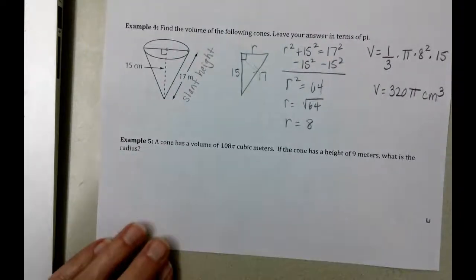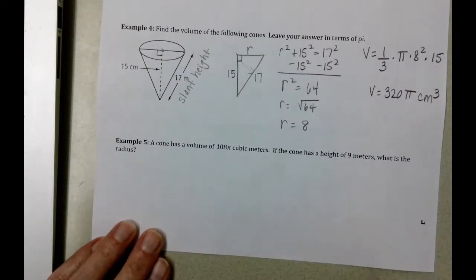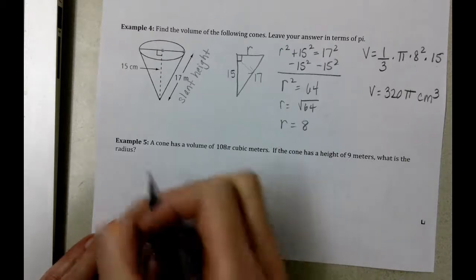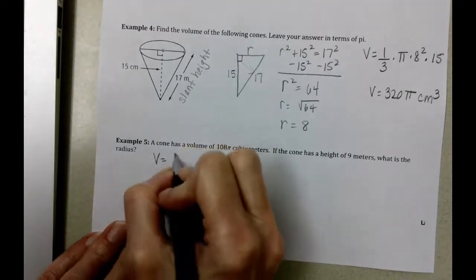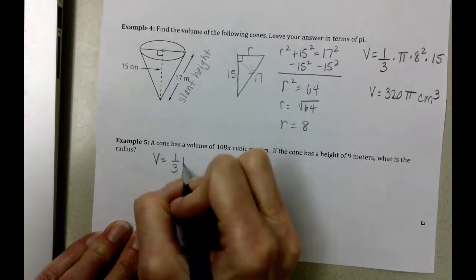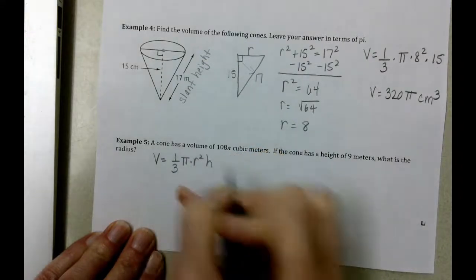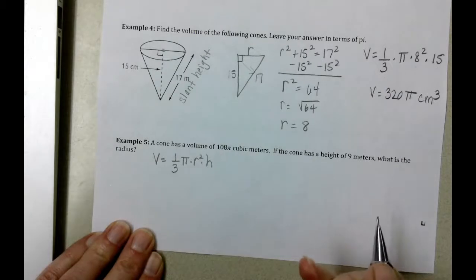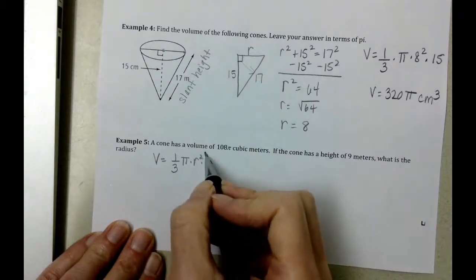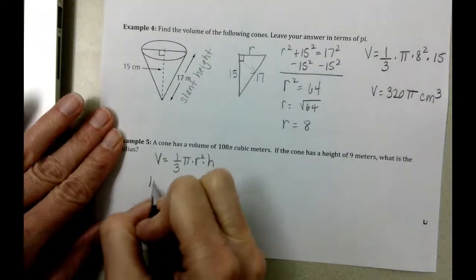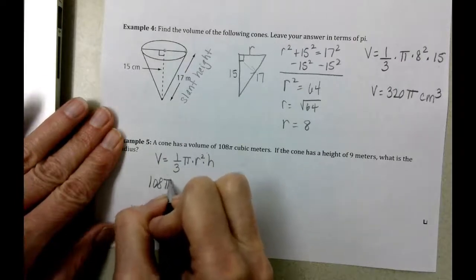Lastly, the cone has a volume of 108 pi cubic meters. If the cone has a height of 9 meters, what is the radius? Once again, the formula is volume equals 1/3 times pi times radius squared times height. What we know is it has a volume. We're going to put the 108 pi in over here for the volume.